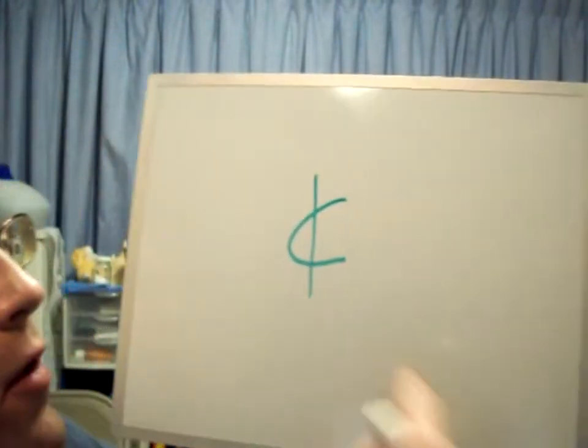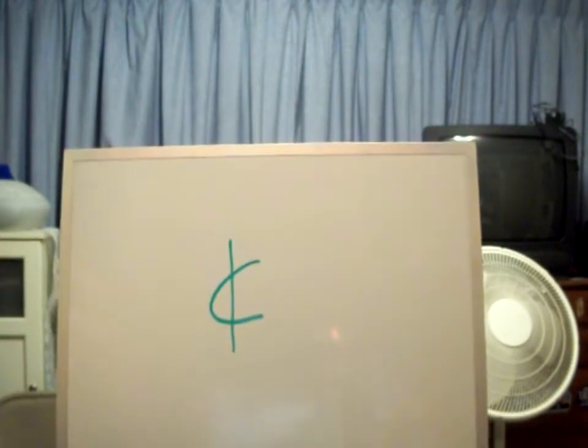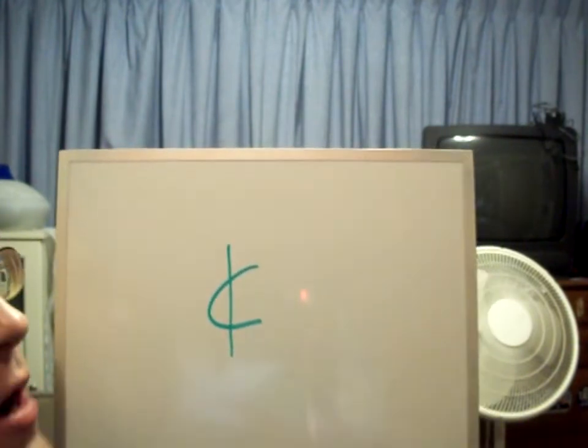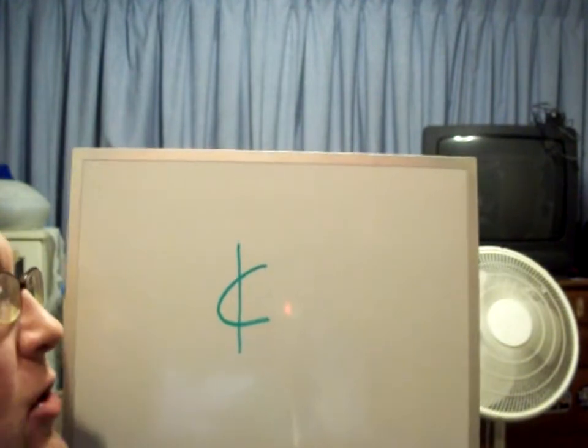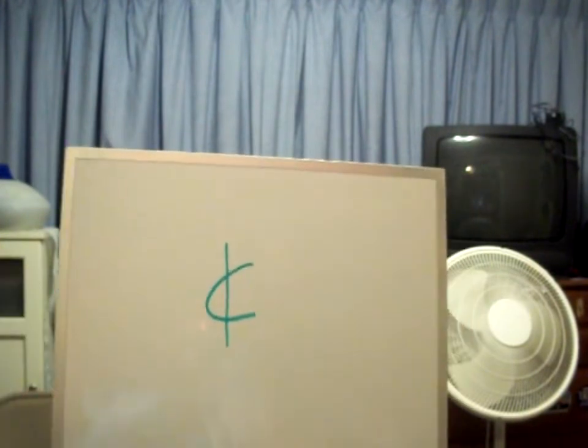Now what about the cent sign? That came about later, in the 1800s. Instead of writing out the word 'cent,' they would just put a C. But since people normally think of a C as just a letter of the alphabet — especially a lowercase c — they wanted it to denote currency, so they drew a line through it and said that's 'cent.' That became the abbreviation for cent.